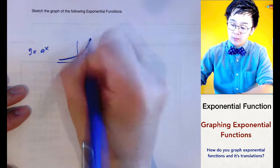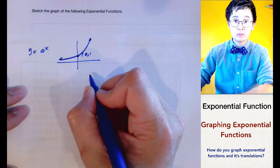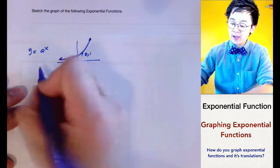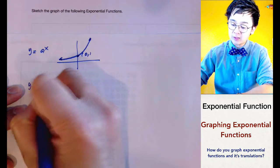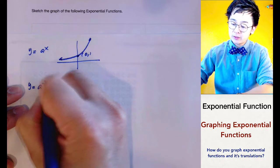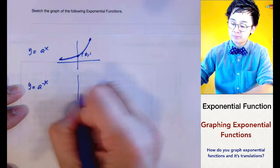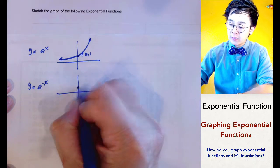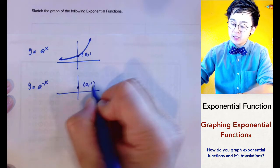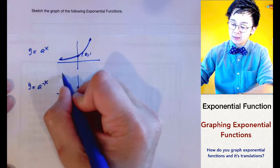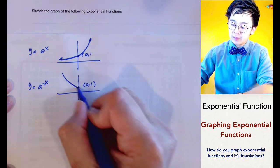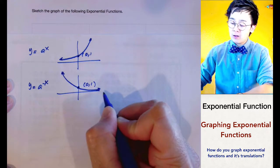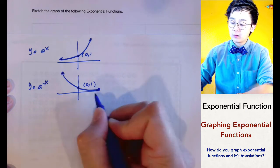The only way this graph will be reversed is when you have y equals a to the negative x. When you have a negative exponent, the y-intercept will still be at (0, 1) but the graph will be decreasing, and the asymptote is still at y equals 0.